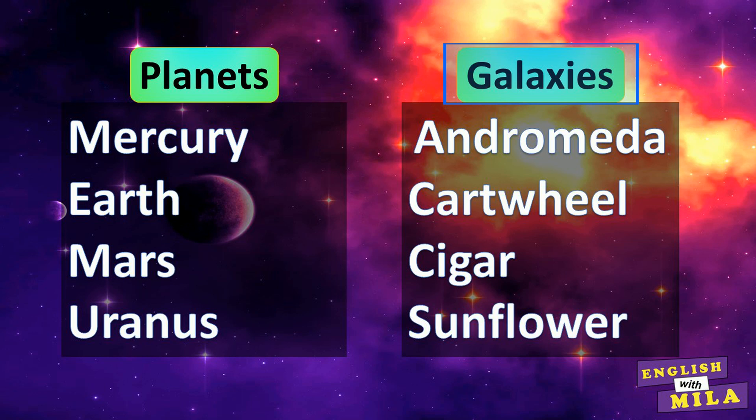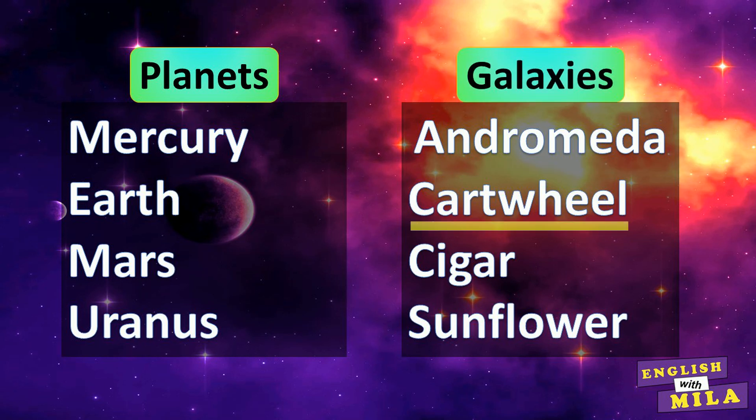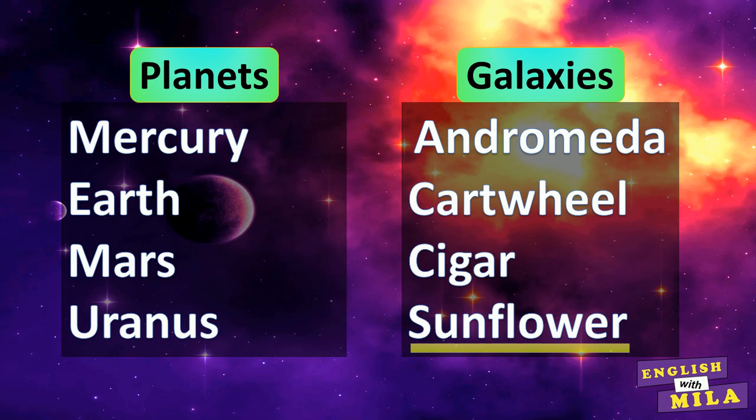You can see here a list of names and your task will be to divide them into planets and galaxies. Planets: the Andromeda Galaxy, the Cartwheel Galaxy, the Cigar Galaxy, the Sunflower Galaxy.